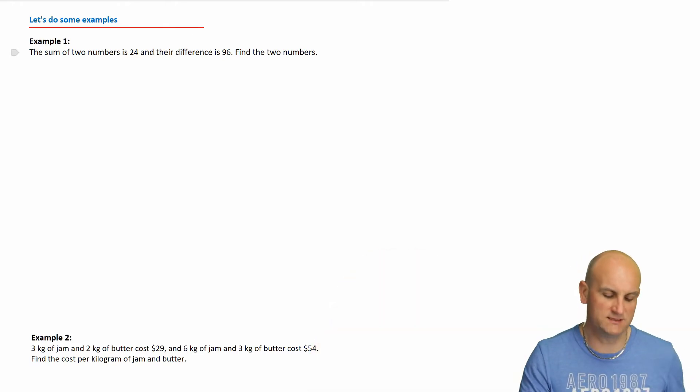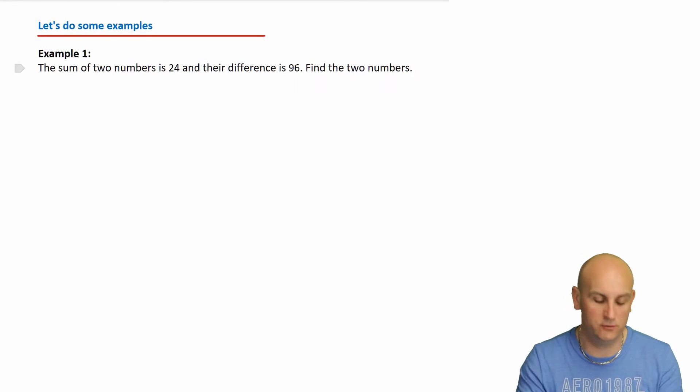So here's example one. The sum of two numbers—now it surprises me the number of people who do not know what the word sum is. It means plus. And product means times. The sum of two numbers is 24, and the difference—again, number of people who don't know what difference means subtract—is 96. Find the two numbers.